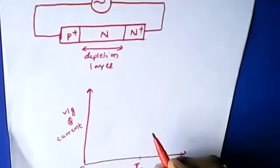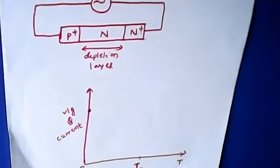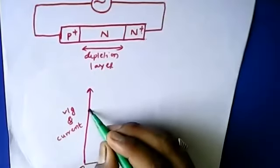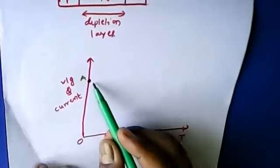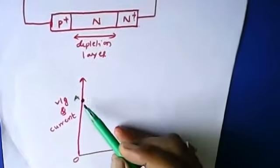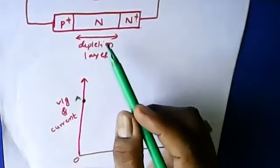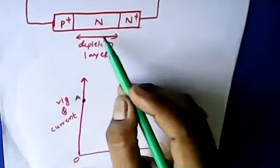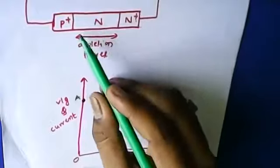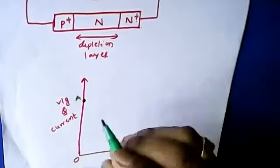At point A on the graph, the electric field is uniform throughout the device. Its magnitude is large but less than the voltage required for avalanche breakdown. The magnitude in the depletion region is large but less than that required for avalanche breakdown at this particular instant.